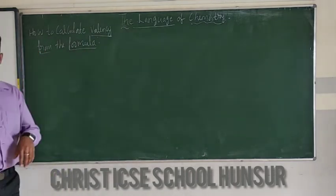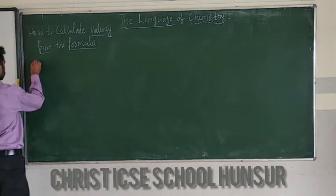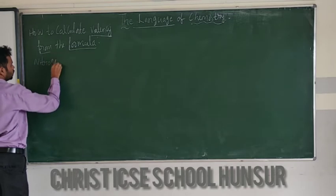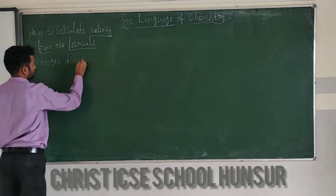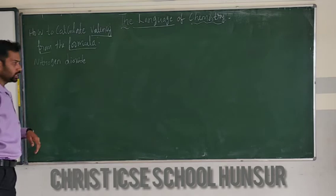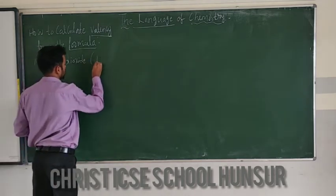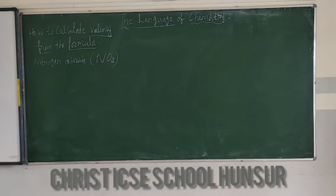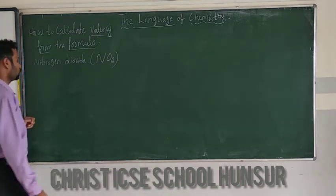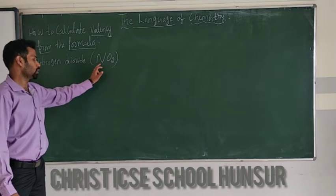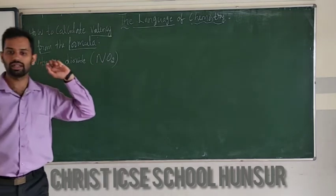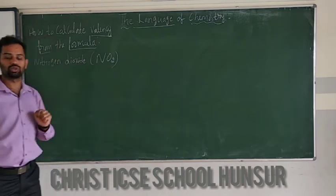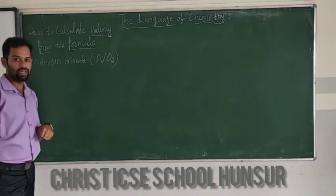First of all, I will take my example: nitrogen dioxide, NO2. How to calculate the valency of nitrogen from NO2? There is one method I will use to calculate the valency.